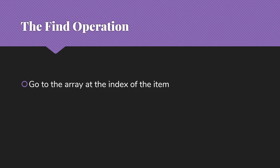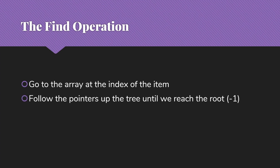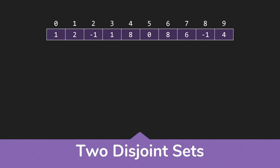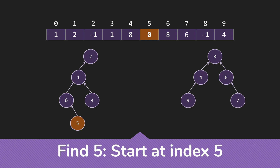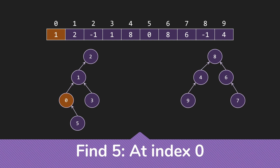Let's talk about the find operation. We're going to go to the array at the index of the item, follow the pointers up the tree — those values in the array — until we reach the root, which will have value minus 1. The set name will then be the index of that root. Here I have an array with two disjoint sets in it. Here's the tree representation so that it's easier to follow what's going on. Remember, the computer only has the array; all drawings of trees are just for us humans. I want to find 5: I start at index 5, it has value 0 so I go to index 0, that has value 1 so I move to index 1, that has value 2 so I move to index 2, that has value minus 1, so I'm at the root and the label for this set is 2.